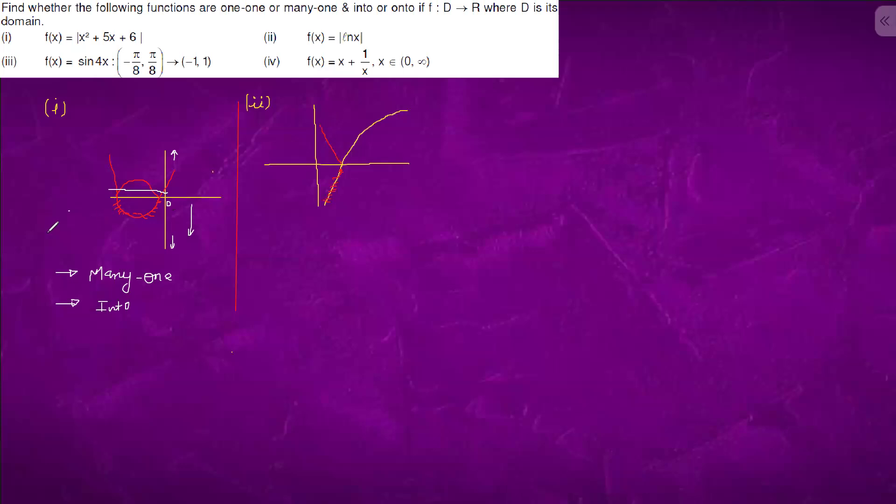So by this we can say that this is many one. For one value of y, we have more than two intersection. This is many one. Second, our range was initial range was minus infinity to infinity. Now it is left with only zero to infinity. So this is into.